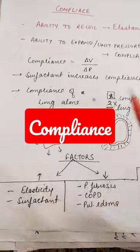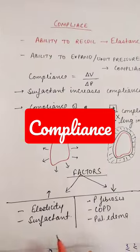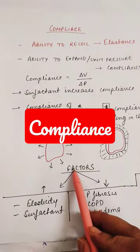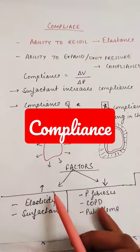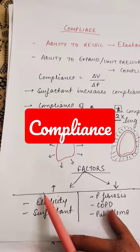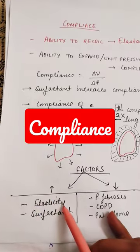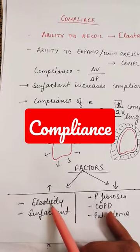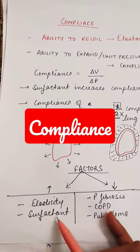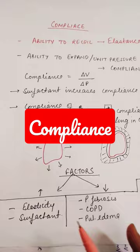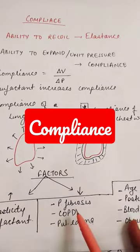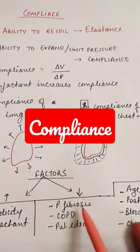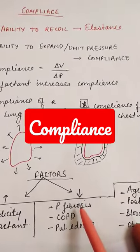What are the factors that affect compliance? Compliance will be increased when we have elastic tissue in our lungs and when surfactant is present. It can be reduced when pulmonary fibrosis is present, as fibrotic tissue will prevent the lung from expanding.